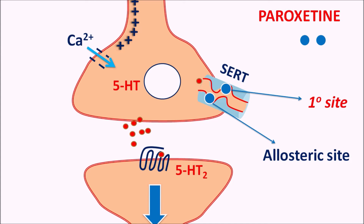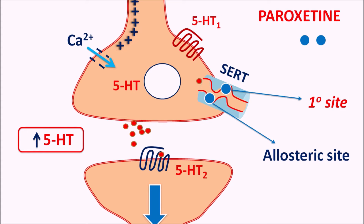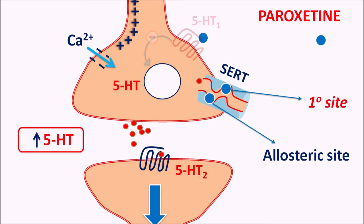When these sites are blocked, 5-HT cannot be taken back into the nerve terminal and remains within the synaptic cleft. In this way, paroxetine increases the levels of 5-HT within the synaptic cleft, resulting in increased serotonergic transmission. Additionally, paroxetine can block presynaptic 5-HT1A receptors — which normally inhibit the release of 5-HT — thereby removing the inhibition of neurotransmitter release and further increasing serotonergic transmission, which improves symptoms in both depression and anxiety.